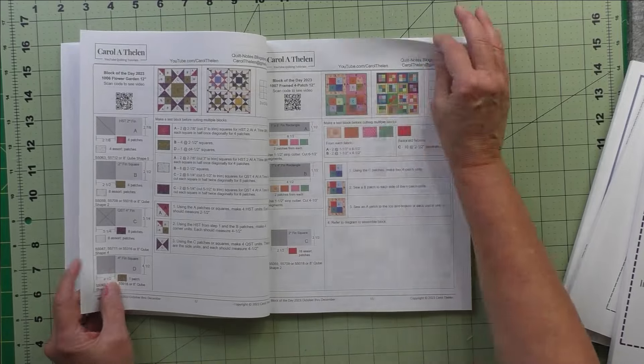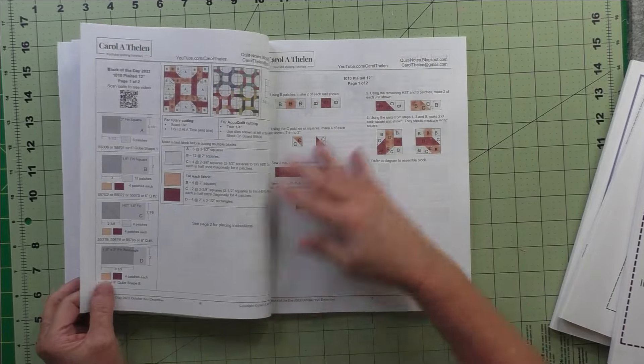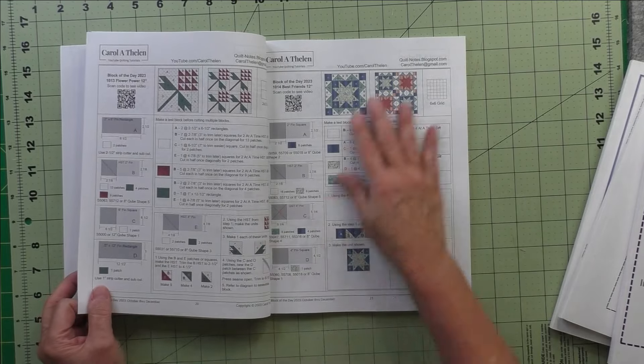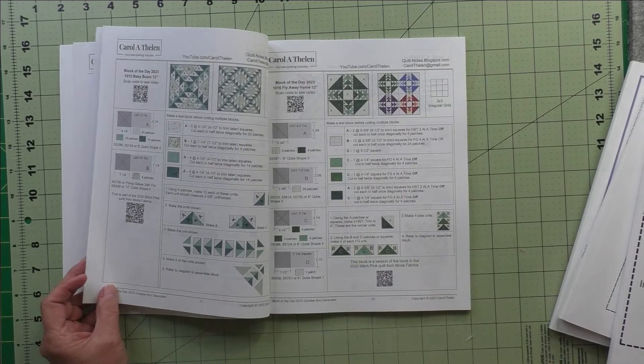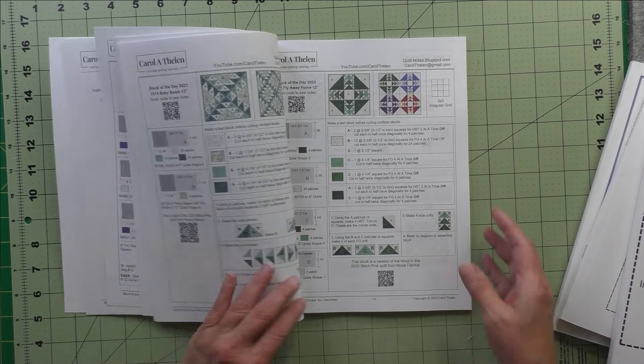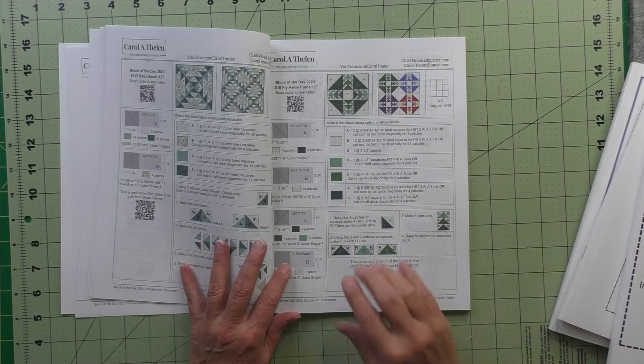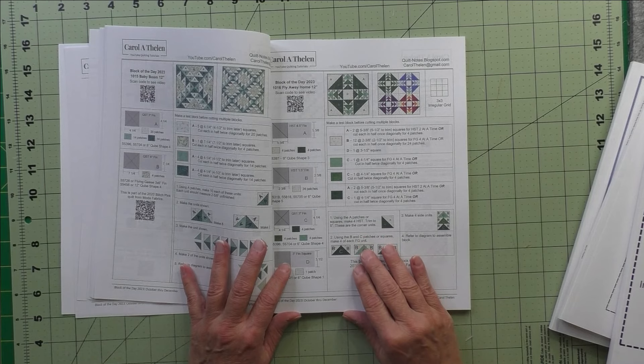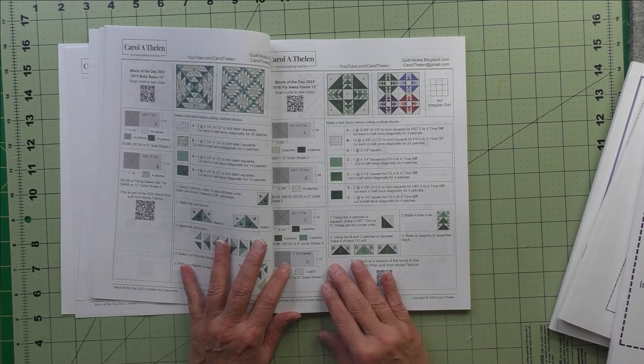So here we go. All the blocks are here and all of the patterns for any quilts are in here as well. This book does not have the watermark printing going across it, so there's a link at the bottom in the description of this video to where you can buy all four of the books on Amazon.